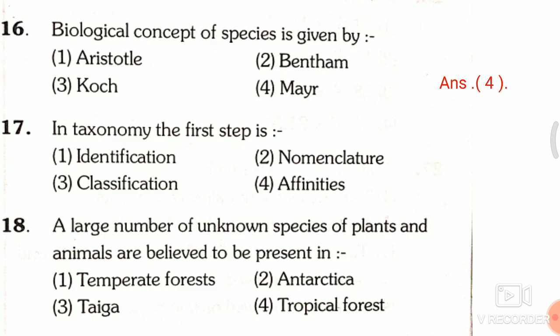Question 17: In taxonomy, the first step is — first, identification; second, nomenclature; third, classification; fourth, affinities. The correct answer is the first one, that is identification.